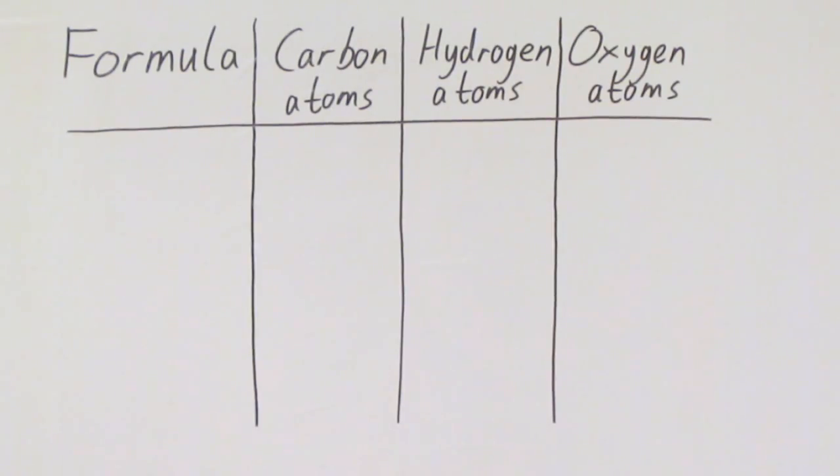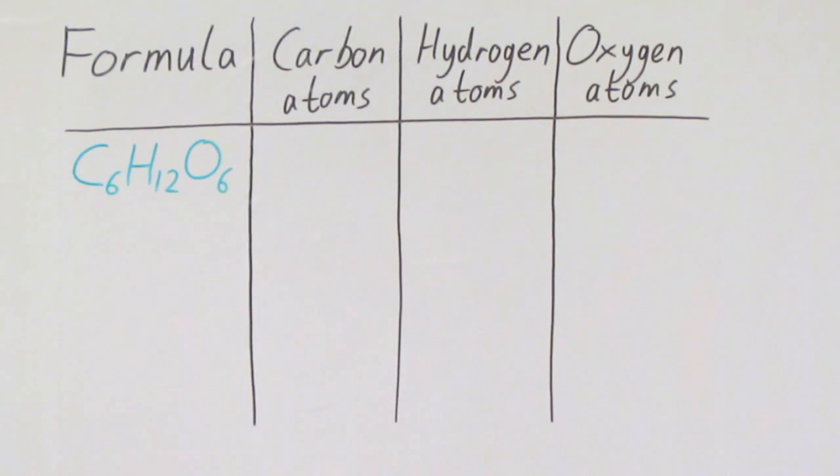Let's have a quick look at a few more examples. And all I'd like you to do is in your head work out how many carbons, how many hydrogens, and how many oxygens there are in each of these molecules. Ready? Here's the first one. C6H12O6. This is the formula for glucose. I'll give you five seconds to work this out, although you probably won't need that long. Off you go.